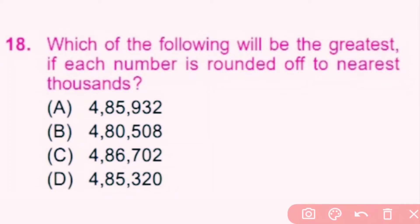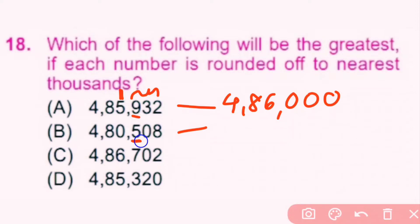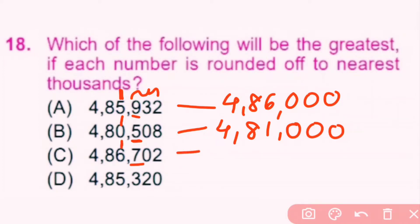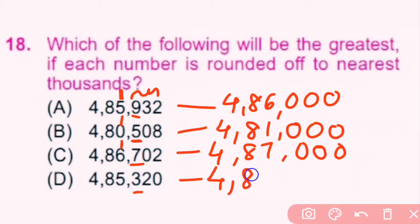Question number 18. Which of the following will be the greatest if each number is rounded off to the nearest thousand? To round off to the nearest thousand, we check the hundreds place. If it is more than five, we add one to the thousands place and remaining places become zero. So the rounded figure will be 4,86,000. Here the hundreds place is equal to five, so we add one, giving 4,81,000. Option C: seven is greater than five, so we add one, giving 4,87,000. Here three is less than five, so the rounded figure will be 4,85,000.